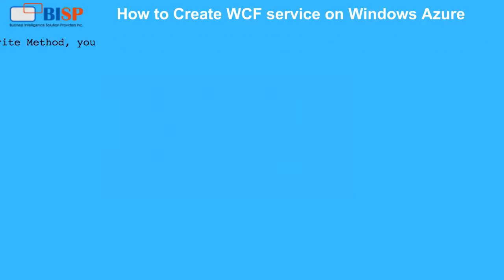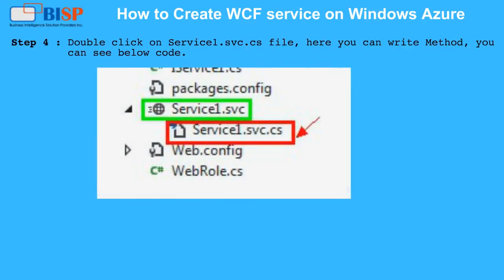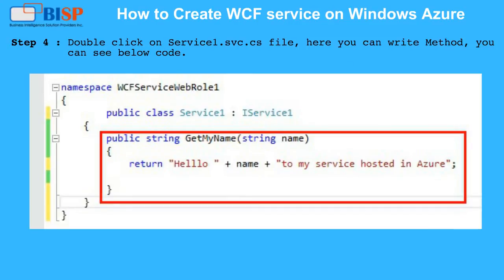Step 4: Double click on the Service1.svc.cs file. Here you can write your method. You can see the code below.